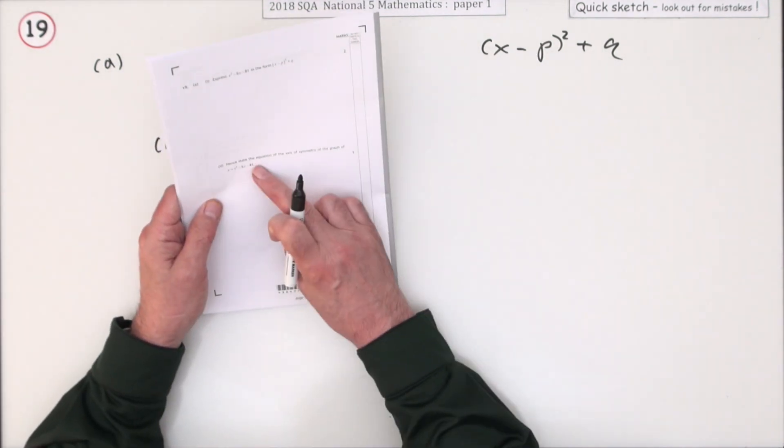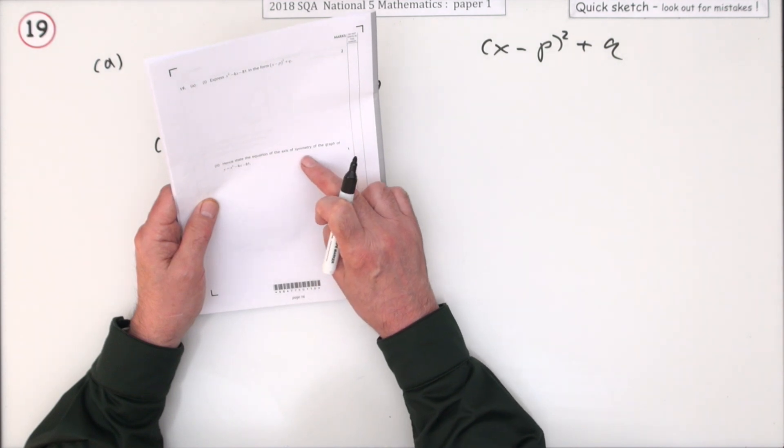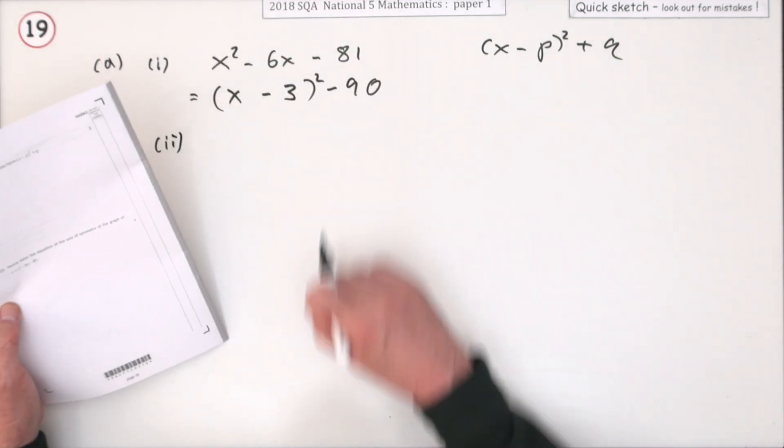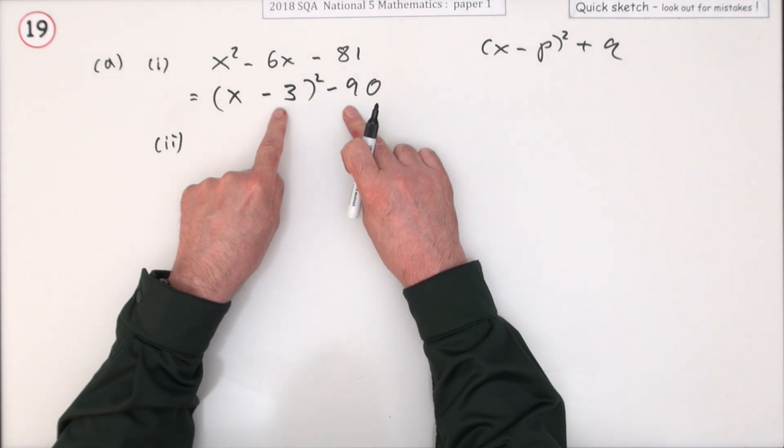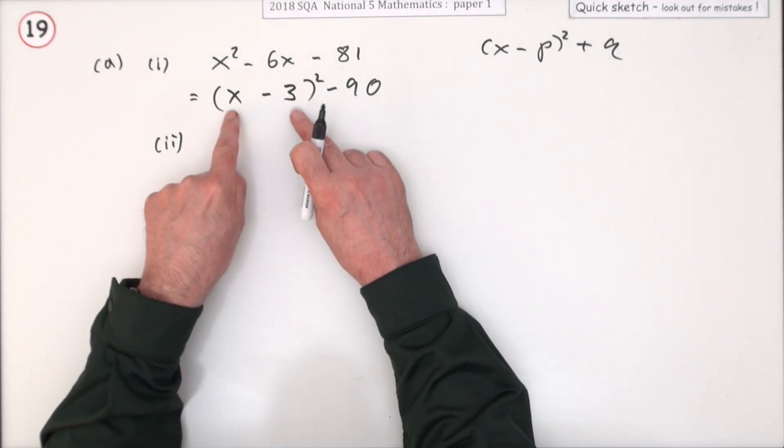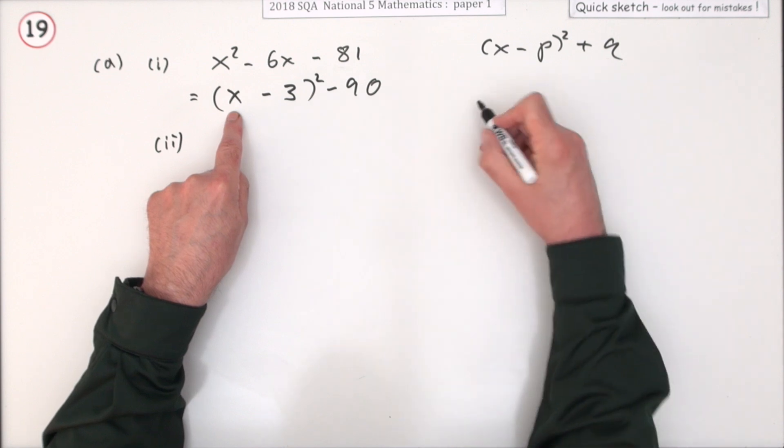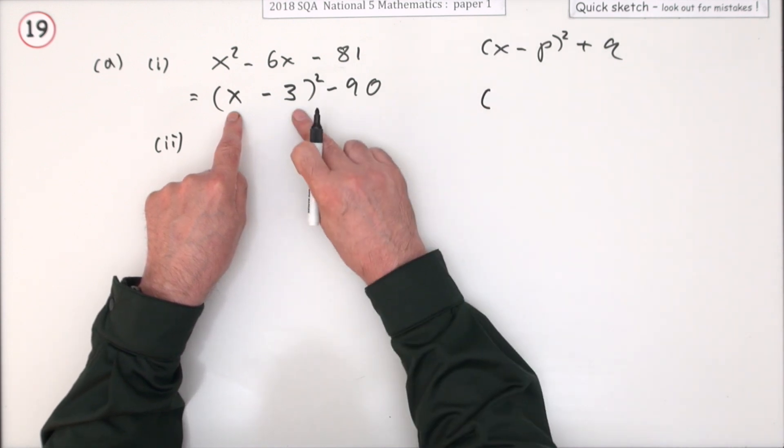Next bit says. Hence state the equation of the axis of symmetry of the graph of this. Well you know the turning point here is the opposite of this. It's whatever it takes to make this bracket equal to zero. Maybe I'll put it down here. Might be in a later part of the question.